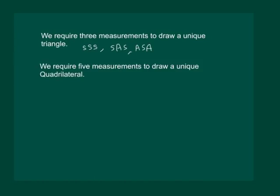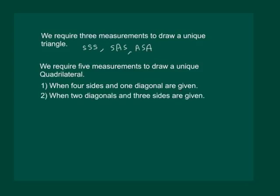But we require five measurements to draw a unique quadrilateral. That means it can be drawn when four sides and one diagonal are given, or when two diagonals and three sides are given.